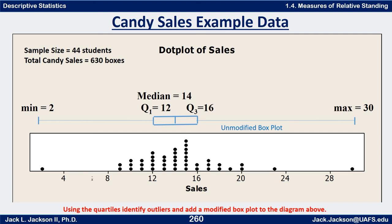Now what we'd like you to do is identify outliers making use of the quartiles we've just computed and add a modified box plot to the diagram. Go ahead and do this on your own, come back when you're done. Press pause now.